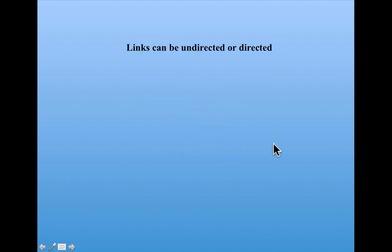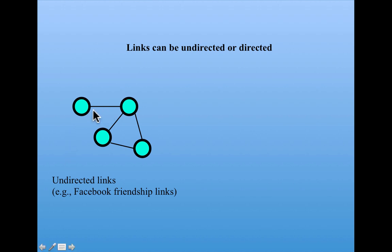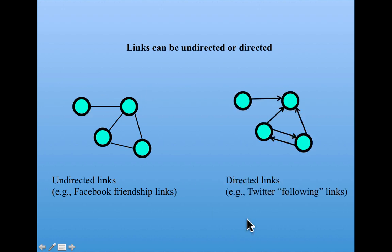Now, links can be either undirected or directed. This network shows undirected links. This could be something like Facebook friendship links where if you are friends with another person, they are automatically friends with you. On the other hand, if you follow someone on Twitter, that doesn't necessarily mean that they also follow you. So, these would be directed links where the arrow indicates the direction. This might be me following somebody else on Twitter, but that other person does not follow me.